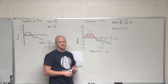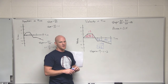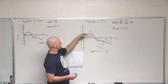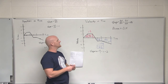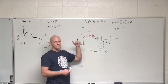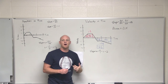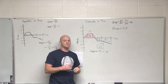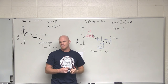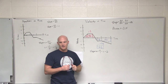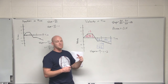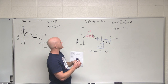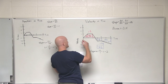One more question: where is the object speeding up? Does that mean the same thing as positive acceleration? No. Speeding up and slowing down refer to the relationship between velocity and acceleration. If velocity and acceleration point in the same direction — both positive or both negative — then the object is speeding up. If both are positive, it's gaining positive velocity; if both are negative, it's speeding up in the backwards direction. So where are velocity and acceleration both positive? Right here in this region — that's where you're speeding up.